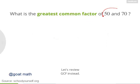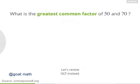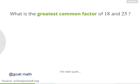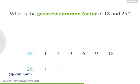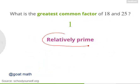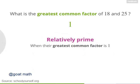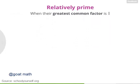Now for another question. What's the greatest common factor of 50 and 70? Right, their greatest common factor, or GCF, is 10. That's the largest factor these numbers share. So next, what's the GCF of 18 and 25? Excellent, so here are the factors of 18 and here are the factors of 25. The only number that appears on both lists is 1. So the GCF of 18 and 25 is 1. And that's what it means to say that two numbers are relatively prime — it means their greatest common factor is 1. And by the way, another way to say that numbers are relatively prime is to say they're co-prime. It means the same thing.